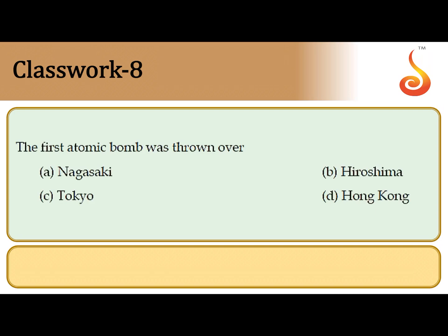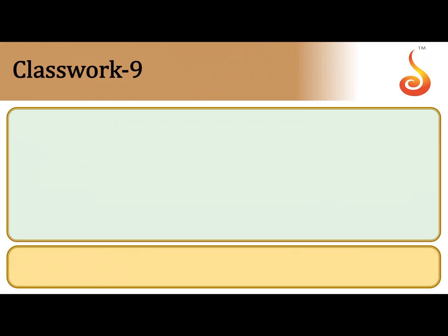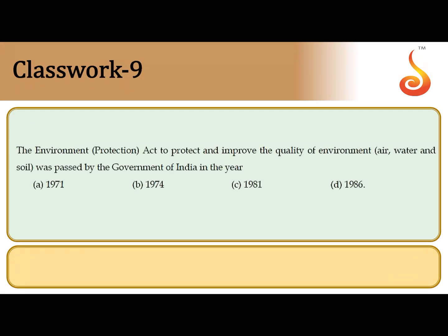The eighth question: the first atom bomb was dropped over the city of Hiroshima in Japan in the month of August 1945. So the correct answer is option B. The ninth question: the Environment Protection Act was passed by the government of India in the year 1986. So the correct answer is option D.